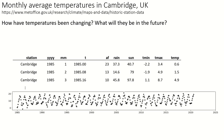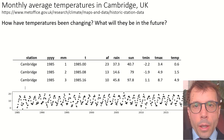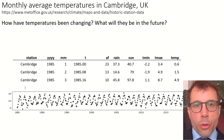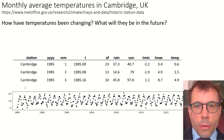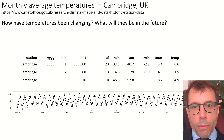Here's a data set of monthly average temperatures from a weather station in Cambridge. This data set has one row per month, and each row records the timestamp of each reading, as well as a few other columns like the amount of sun and rain and the number of days with frost in the air.